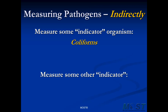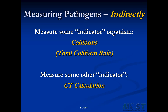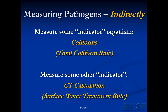The other indirect indicator is embodied in another regulation — it is the CT calculation. The first regulation, and the subject of this quick video, is the total coliform rule. The second regulation, directed at pathogen safety, is the surface water treatment rule, and we'll have a video on that shortly.